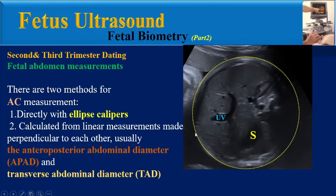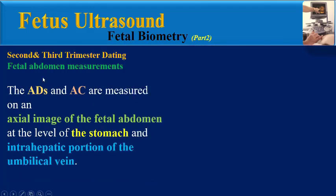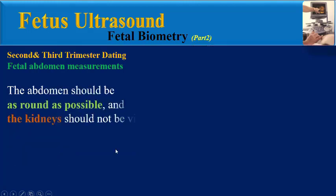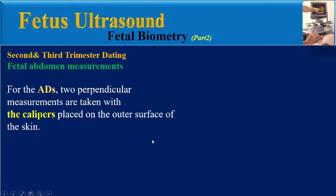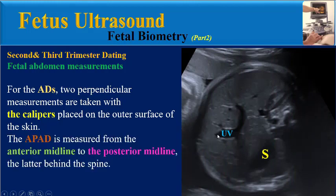For fetal abdomen measurements, there are two methods for AC measurement: directly with ellipse calipers, or calculated from linear measurements made perpendicular to each other — usually the anterior-posterior abdominal diameter (APAD) and transverse abdominal diameter (TAD). These measurements are taken on an axial image of the fetal abdomen at the level of the stomach and the intrahepatic portion of the umbilical vein. The abdomen should appear as round as possible, and the kidneys should not be visible.